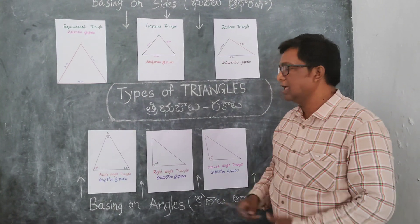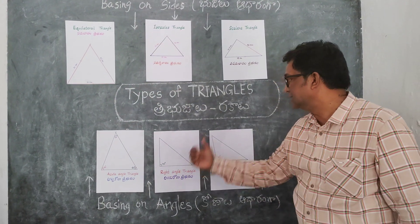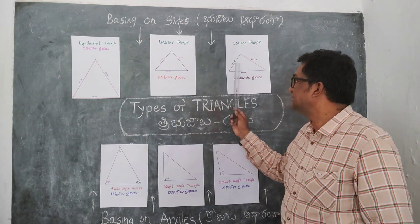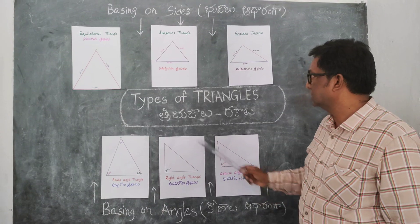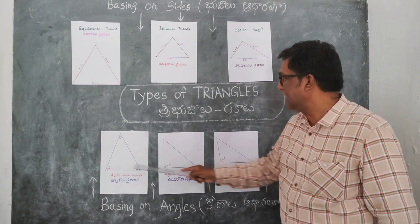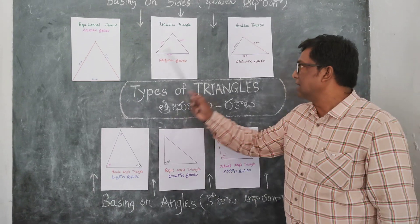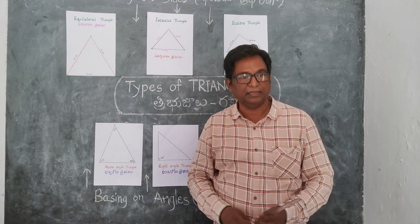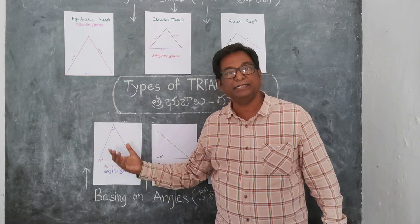Triangles, triangle triangle, triangle triangle. Let's sing about the triangle, let's sing about the triangle. We sing on sides and angles, we sing on sides and angles. Triangles are different types.